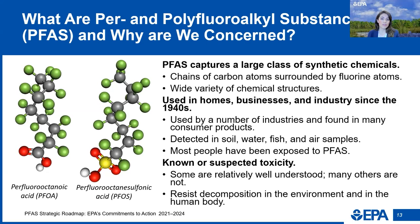Before sharing more about EPA's PFAS roadmap, I want to spend a few minutes talking about per- and polyfluoroalkyl substances, or PFAS, and why we are concerned. PFAS captures a large group of synthetic chemicals made by humans that consist of chains of carbon atoms surrounded by fluorine atoms. There are thousands of different PFAS with a variety of chemical structures. Two of the most widely used and studied chemicals in the PFAS group are known as PFOA and PFOS.